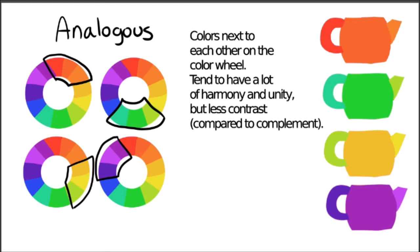Analogous colors have a lot of harmony and unity, but compared to a complementary color scheme, there is less contrast. For example, you would have blue-violet, reddish-violet, and violet, or yellow-green, yellow-orange, and yellow.